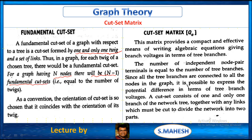As a convention, the orientation of the cut set is chosen so that it coincides with the orientation of its twig. When it deals with tie set matrix, the orientation of the tie set coincides with the link only. But here, the orientation of the cut set coincides with the orientation of the twig. Tie set matrix gives information regarding branch currents; here it gives information regarding node voltages.